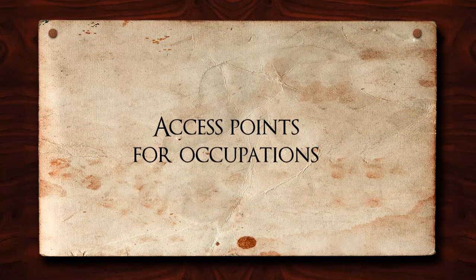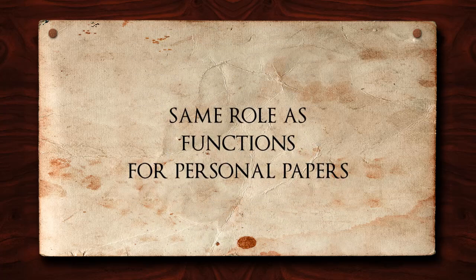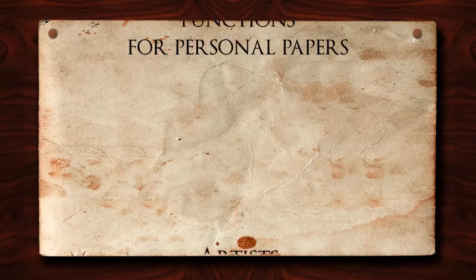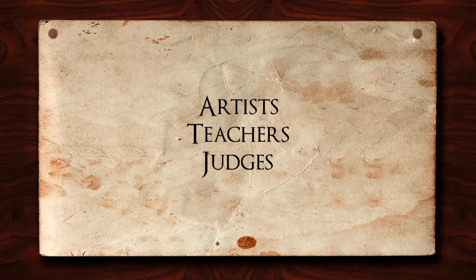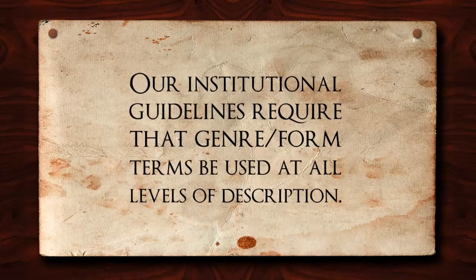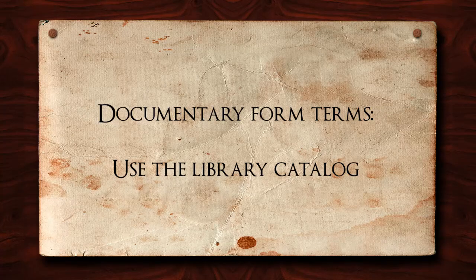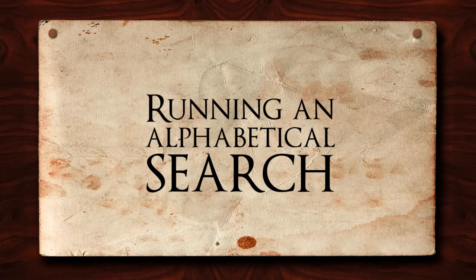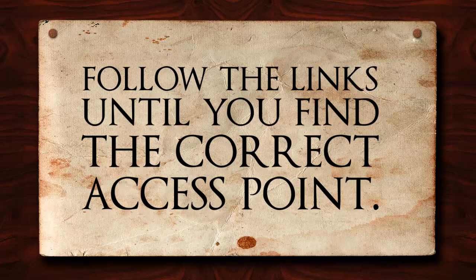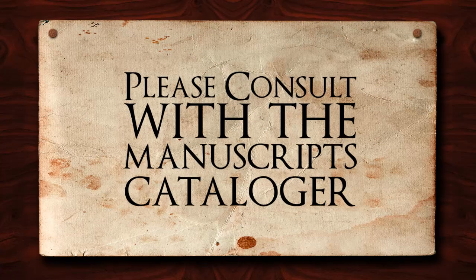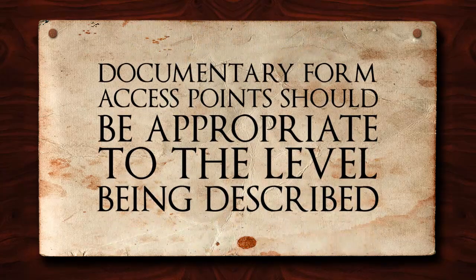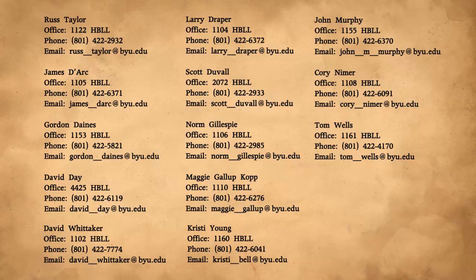Similar to functional terms are access points for occupations. These access points play the same role as functions for personal papers and document the individual occupational activities that generated a body of materials, whether that be the work of artists, teachers, or judges. While function and occupation access points may be used as needed, our institutional guidelines require that genre form terms be used at all levels of description. When selecting documentary form terms, you should use the library catalog by running an alphabetical search for the appropriate genre form. If the term you enter is a non-preferred term, follow the links until you find the correct access point. If you are unable to find the term in the library catalog, please consult with the manuscripts cataloger. As with subjects, it is important to remember that documentary form access points should be appropriate to the level being described and represent at least 20% of the material at that level. For other questions, please consult your curator.